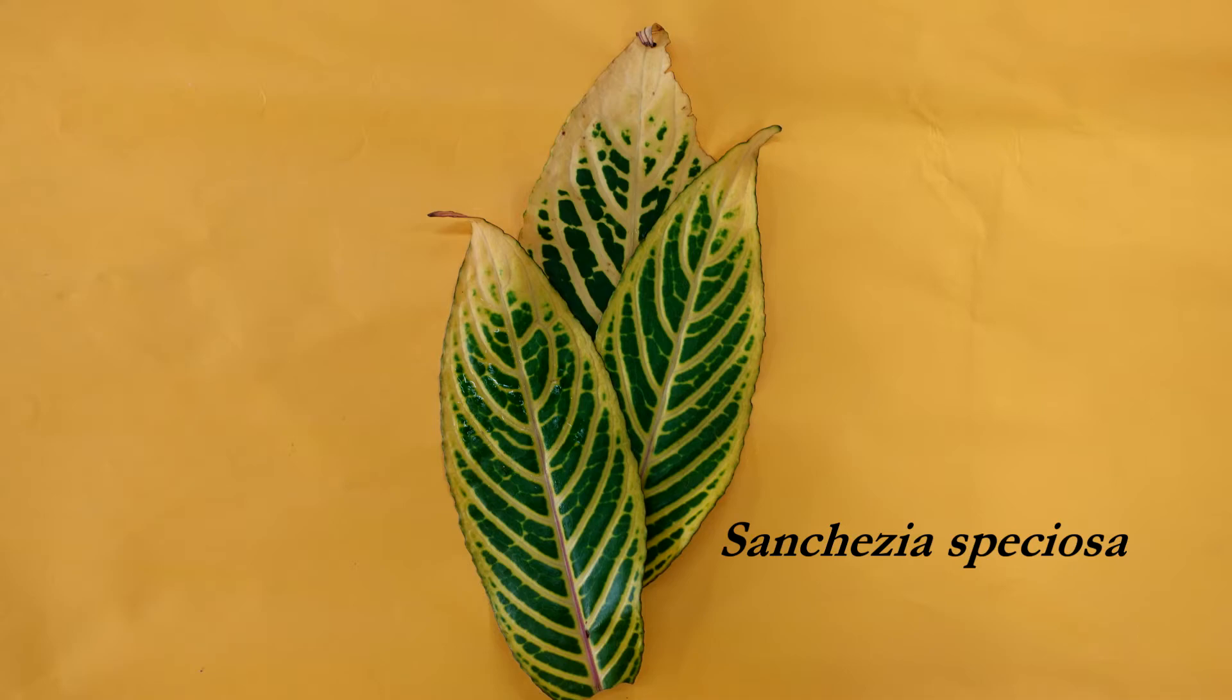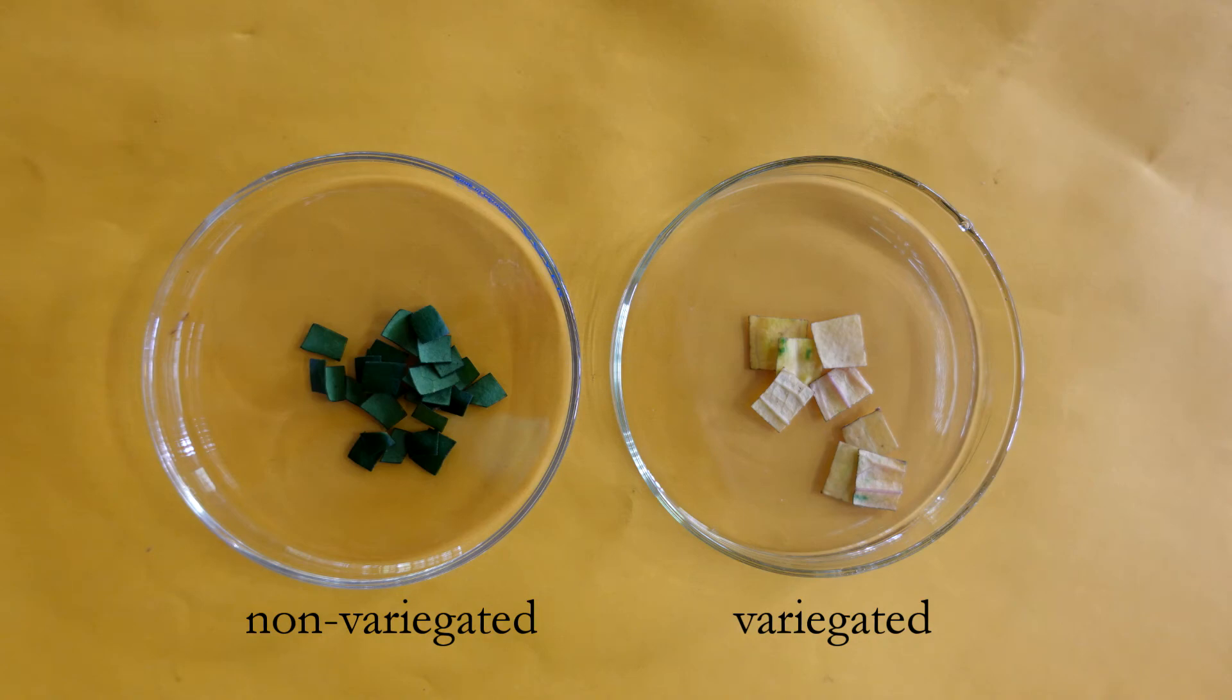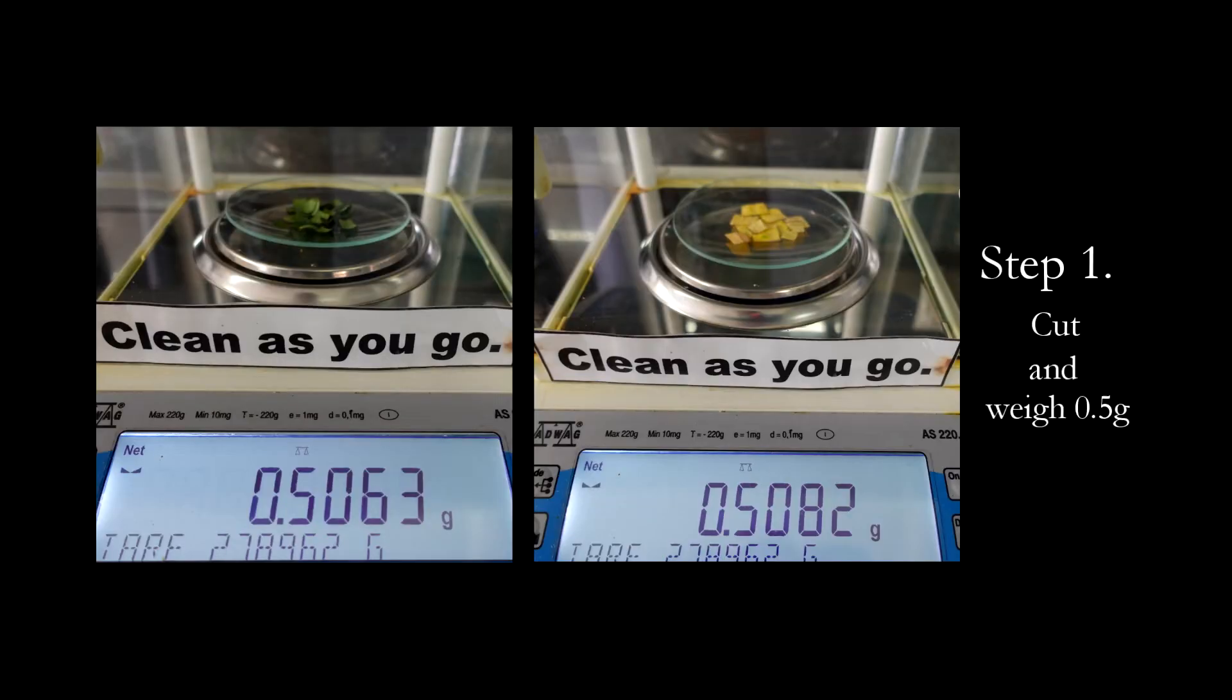In this part of the experiment, we will be using the leaves of Sanchezia speciosa. As you can see, its leaves are variegated and we will be performing the same procedure as before, but this time we will separate the variegated and non-variegated regions of its leaves.